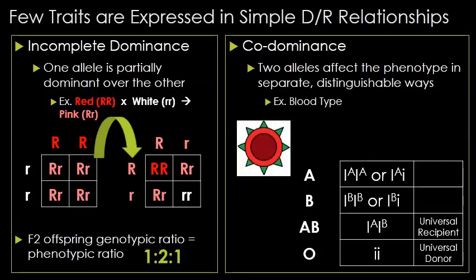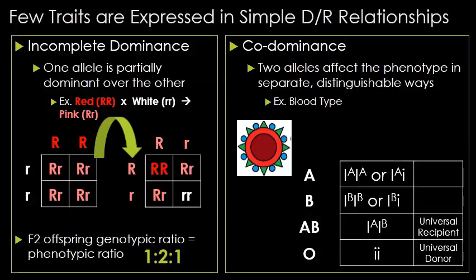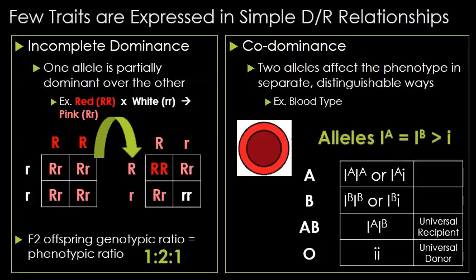Type A blood only has antigens on the surface for type A; B has antigens for type B. AB expresses both separately, so you are both type A and type B at the same time. This is why AB is the universal recipient — it has the receptors to acknowledge both A and B and doesn't destroy itself. Type O blood is the universal donor because it has no antigens and is not rejected by any person's body. Overall, the A allele is co-dominant to the B allele, but both are dominant compared to the lowercase i, or O, allele.